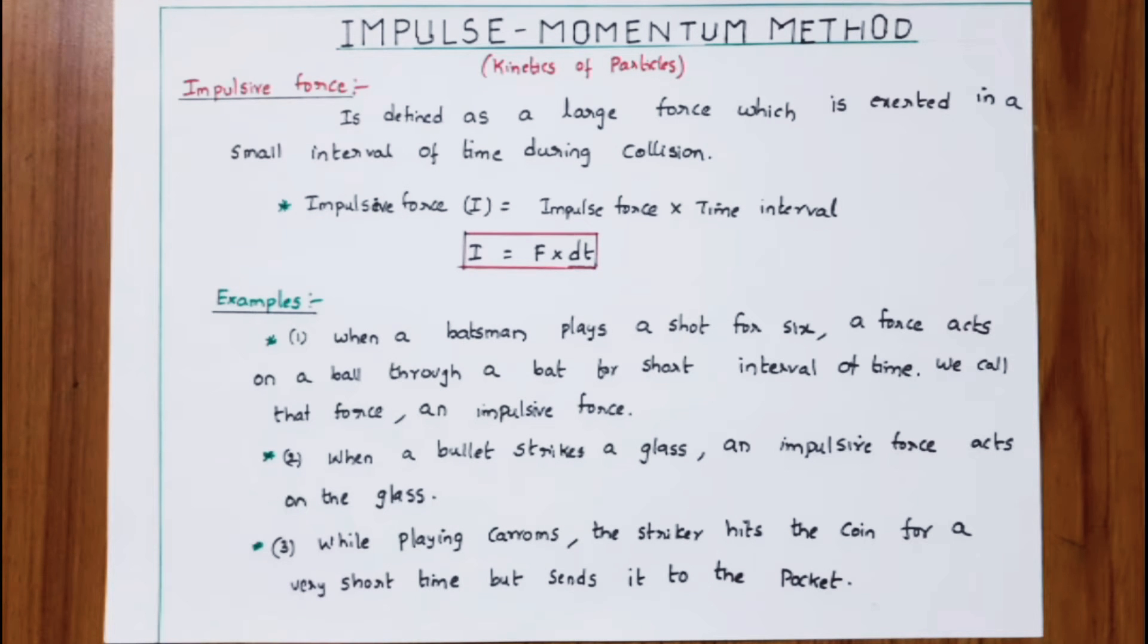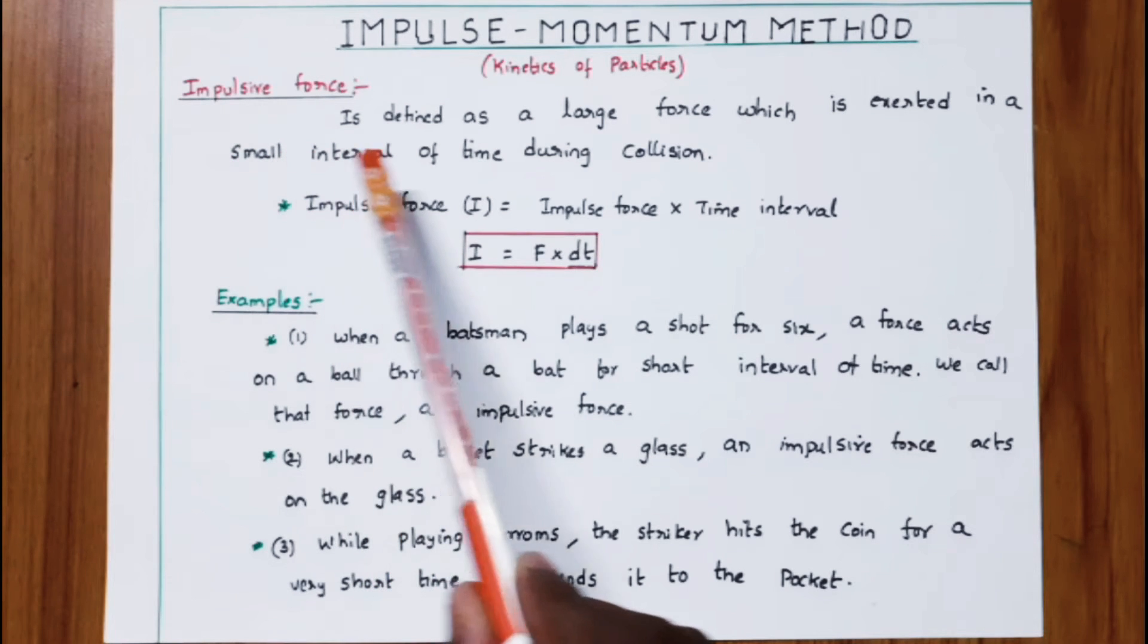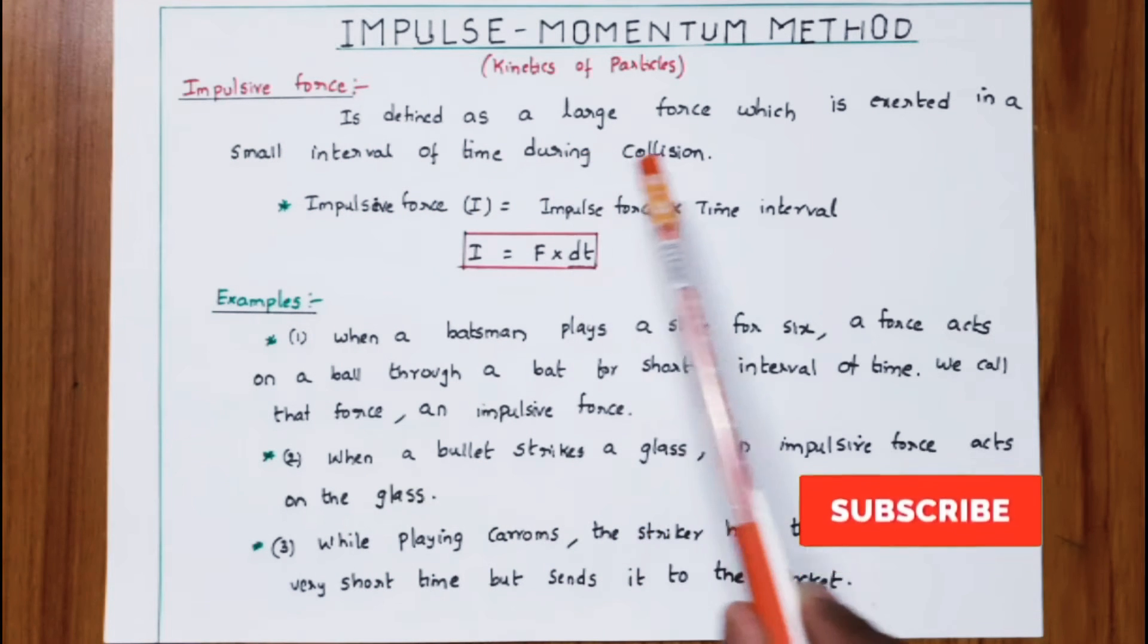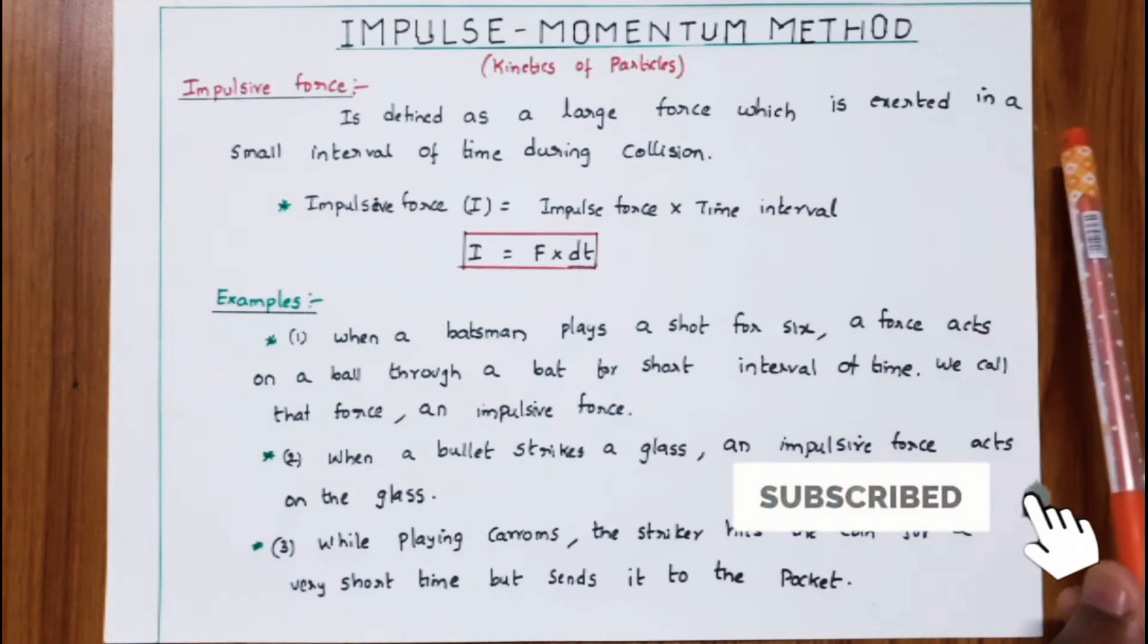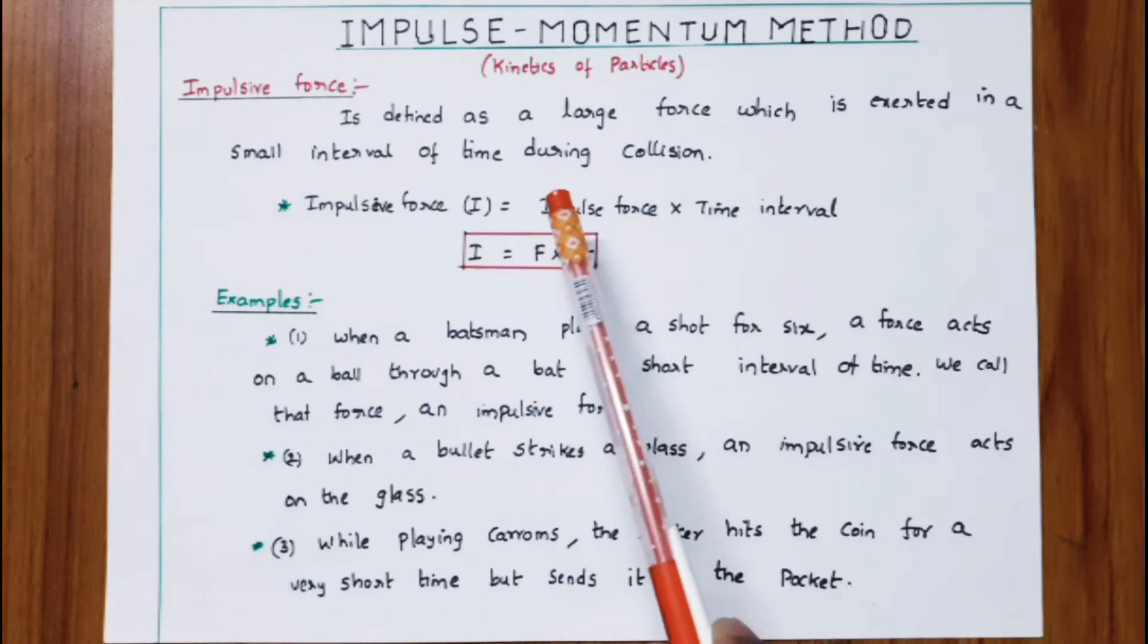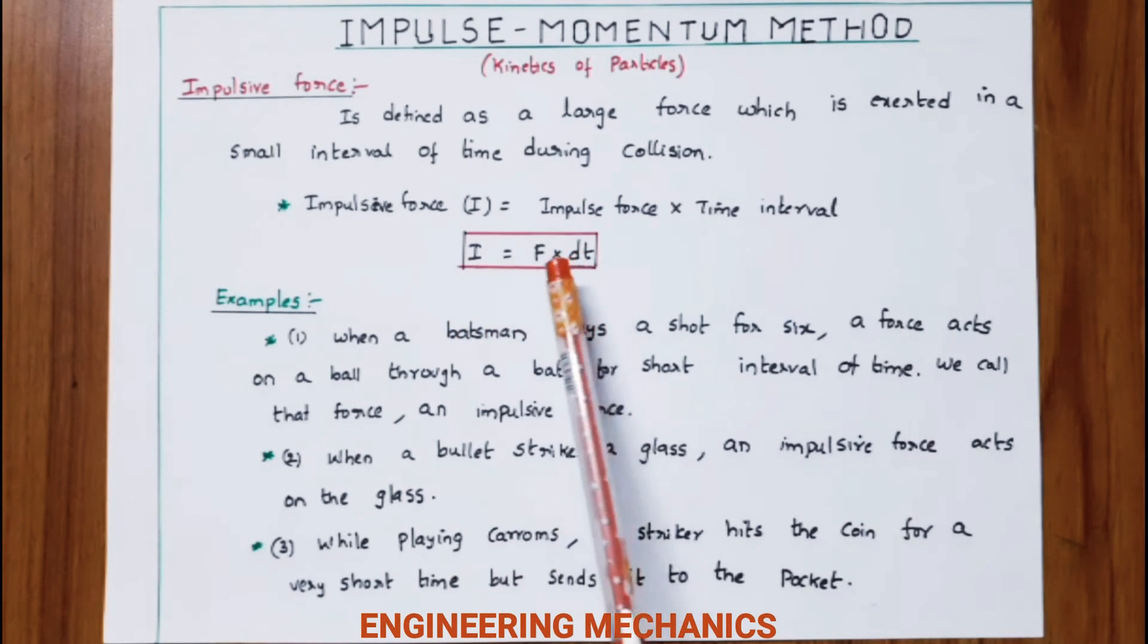The next method in kinetics of particles is the impulse-momentum method. Impulsive force is defined as a large force which is exerted in a small interval of time during collision. Impulse is a large force applied in a short interval of time.